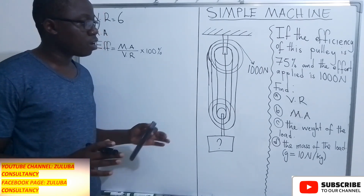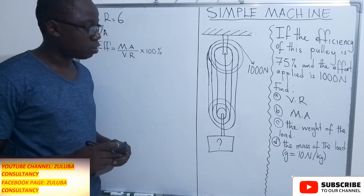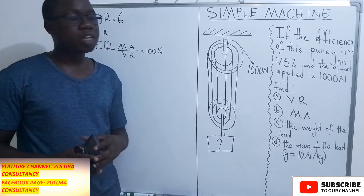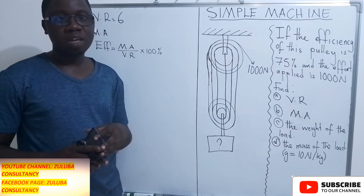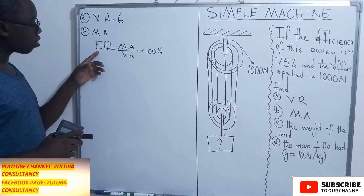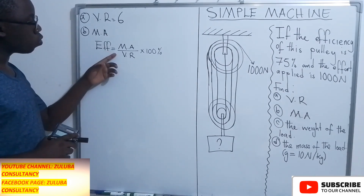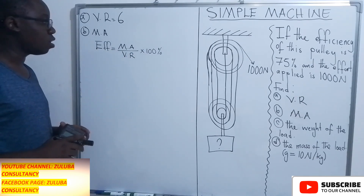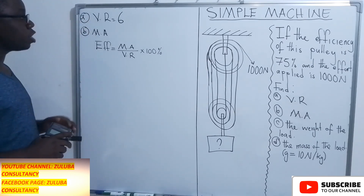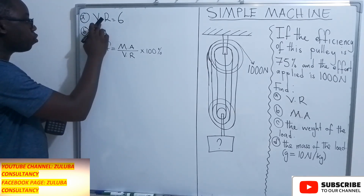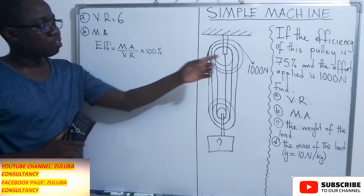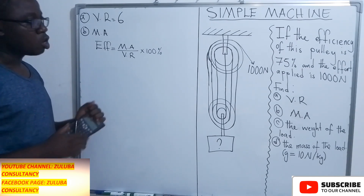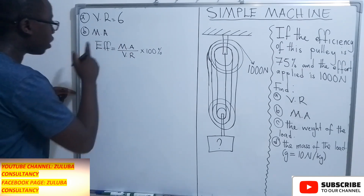The second question is asking us to find the mechanical advantage. To find the mechanical advantage, we need to take advantage of the efficiency that we have been given. We have the formula: efficiency is equal to mechanical advantage divided by velocity ratio, multiplied by 100%. We have already found the velocity ratio, which is 6, and the efficiency given is 75%.